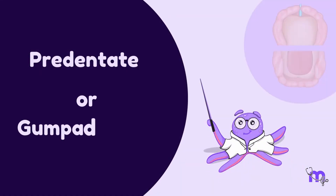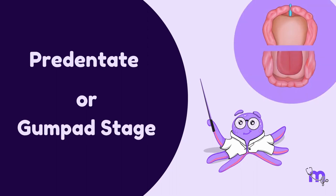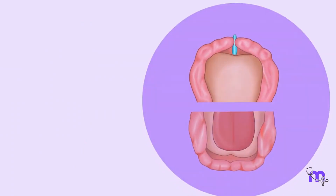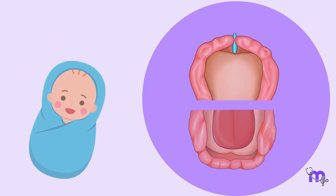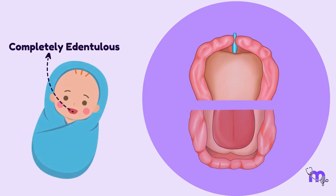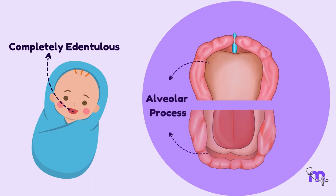This is the period soon after birth, at which point the infant is completely edentulous. The alveolar process at the time of birth is called the gum pad.